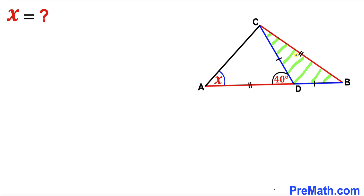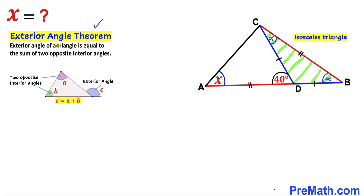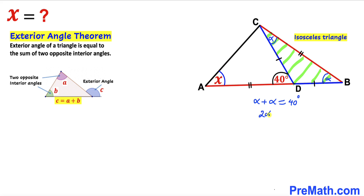Now let's focus on triangle BDC. We can see that this is an isosceles triangle — this side length equals this side length — so these two base angles are equal. Let's call this angle alpha; then the other base angle is alpha as well. Recalling the exterior angle theorem, this 40 degrees is our exterior angle and equals alpha plus alpha. So two alpha equals 40 degrees, meaning alpha equals 20 degrees.